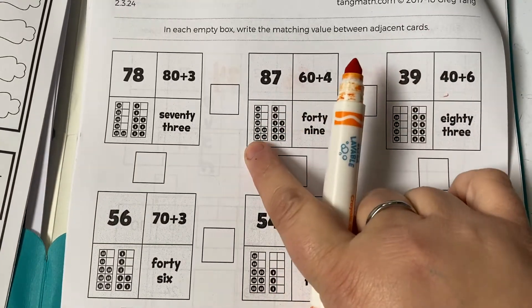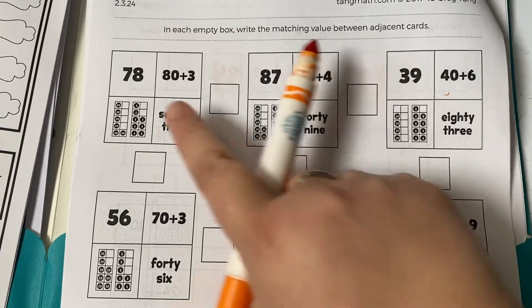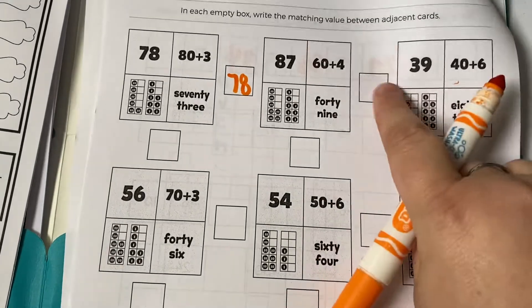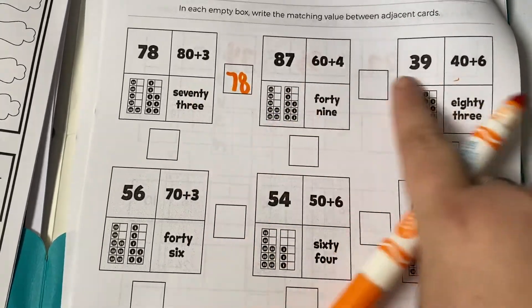To find one that matches. Here's 78 in the model and 78 in the standard form, so I'm going to write that in the middle. You're going to do that for all of the boxes going across and then also up and down.